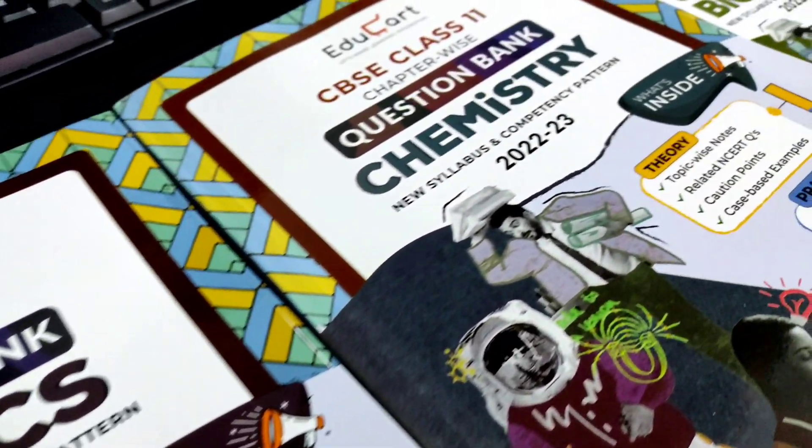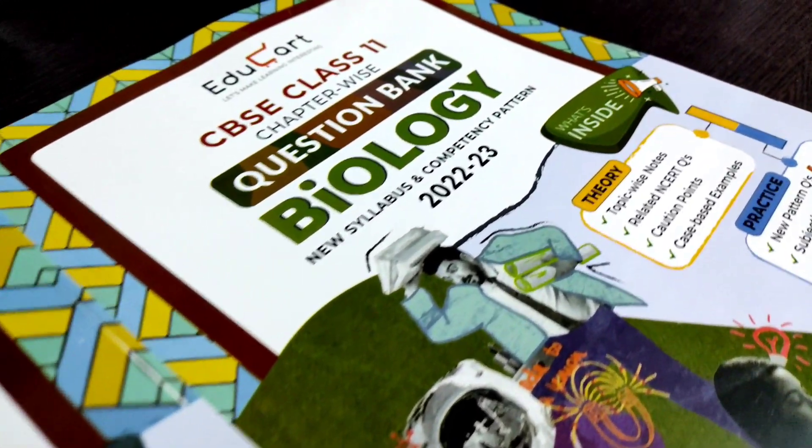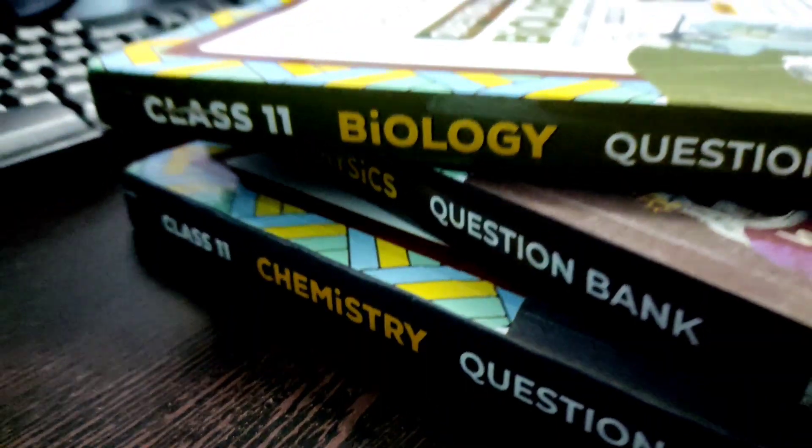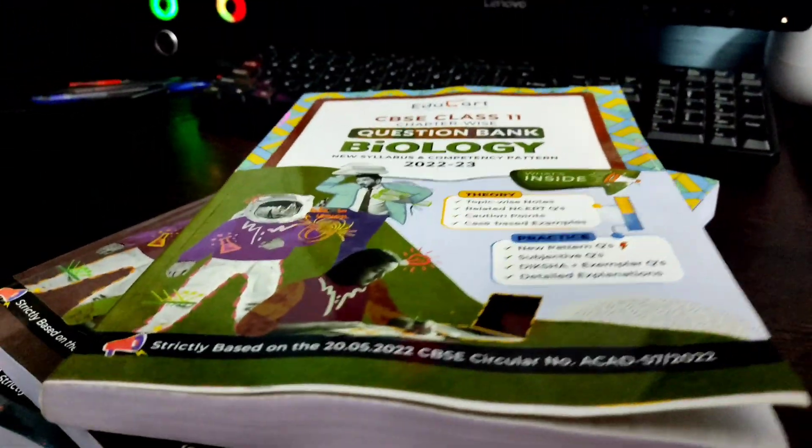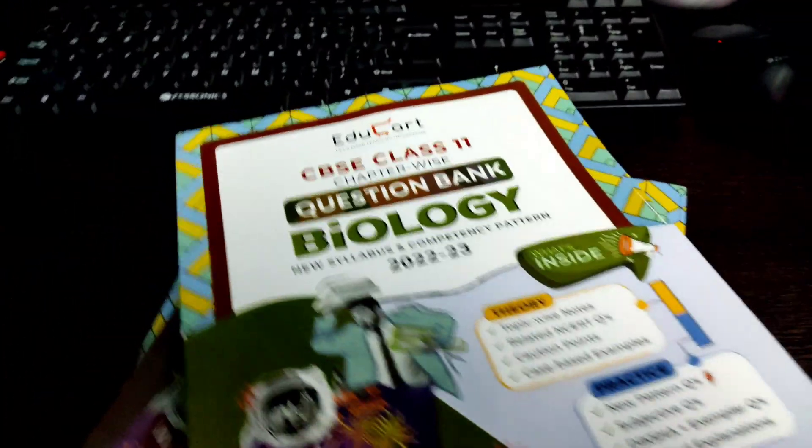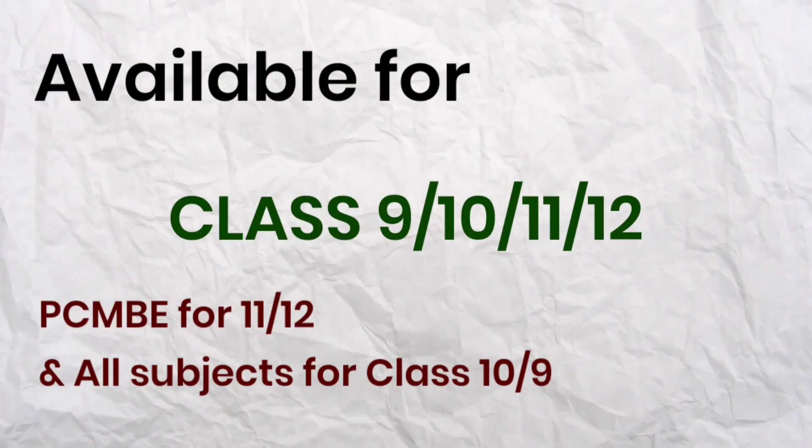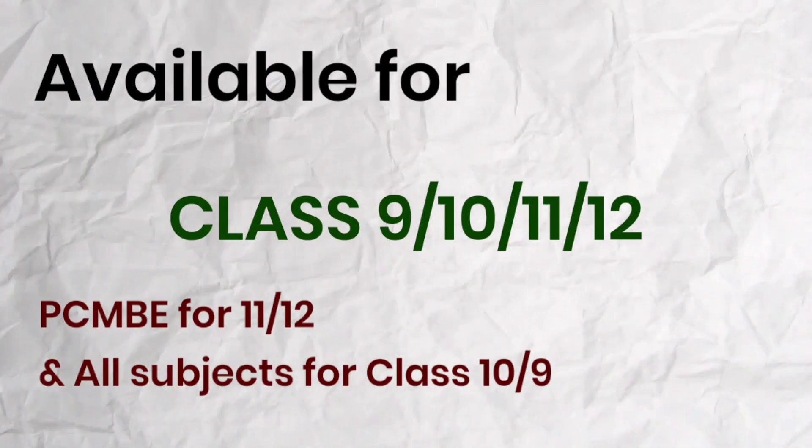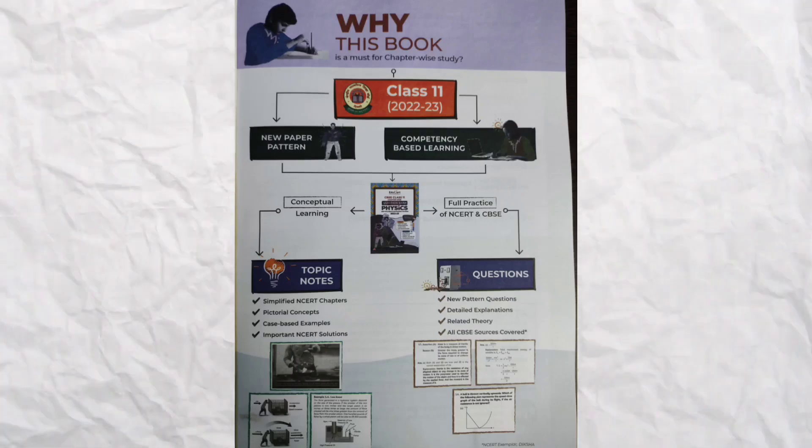Hey guys, if you are preparing for any school exams and want to buy any question bank or book for question practice and for theory revision, then I would suggest you to buy the books of Edukart. So these question banks are available for physics, chemistry, maths and biology for class 11 and 12. And for class 10 and 9, these are available for all the five subjects. And these books are based on new paper pattern released by CBSE.